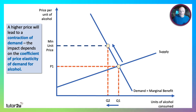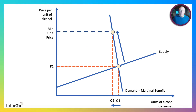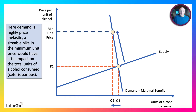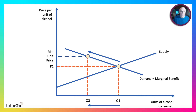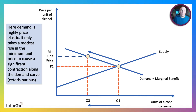When demand is highly inelastic, it takes a high minimum price to have much impact. If demand were more price sensitive, you'd have a bigger effect. With a more inelastic demand curve, a big rise in the minimum price only has a small effect on demand. A sizeable hike would have little impact on total units consumed, other factors remaining the same. Whereas if you have price elastic demand, it only takes a modest increase in the minimum unit price to cause quite a significant contraction along the demand curve.